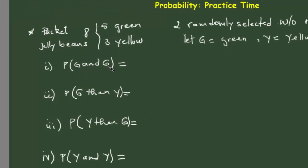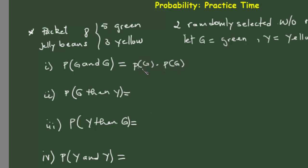The probability of having a green and a green sounds like an independent event, and that's what we saw in our previous video. When you have an independent event, this means the probability of G times the probability of G again. These two events are totally independent — the fact that I choose green first doesn't have anything to do with choosing a green second, and vice versa.